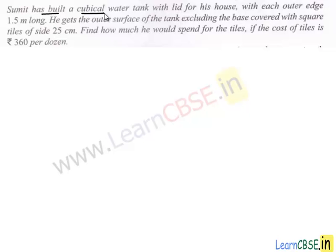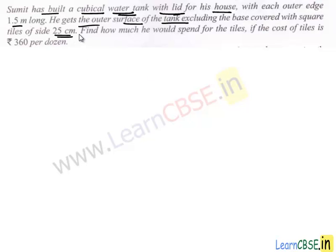In this question, Sumit has built a cubical water tank with lid for his house. With each outer edge being 1.5 meters long, he gets the outer surface of the tank excluding the base covered with square tiles of side 25 centimeters, and we have to find how much he would spend for the tiles if the cost of tiles is 360 rupees per dozen.